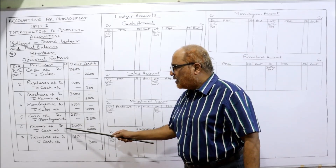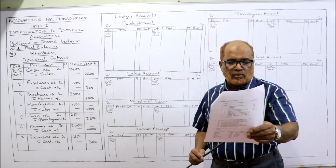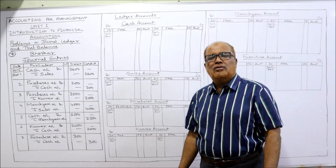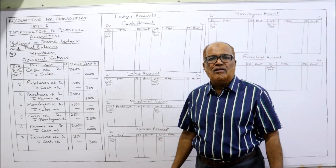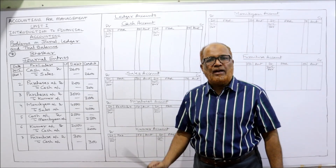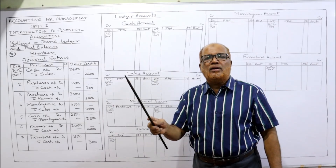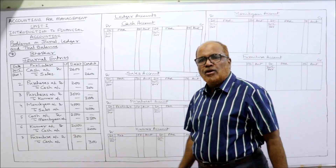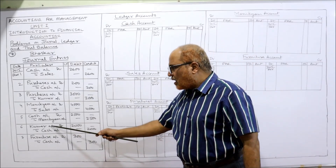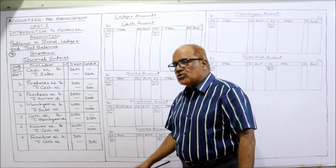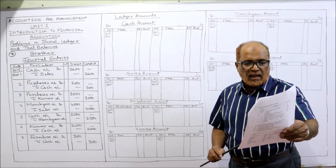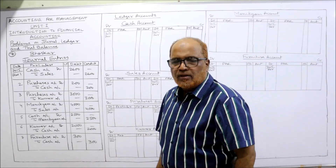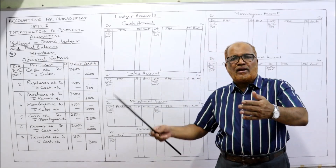Sixth transaction — cash paid to Kumar. Kumar is the receiver, so he should be debited. Cash is going out, so cash should be credited. Entry: Kumar account Dr. to Cash — 2000, being cash paid.